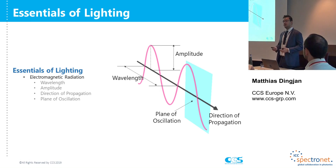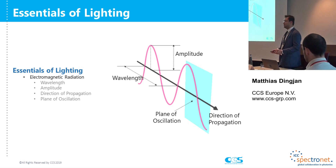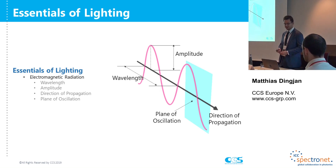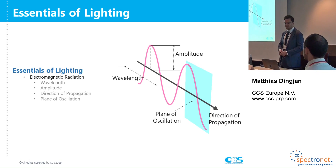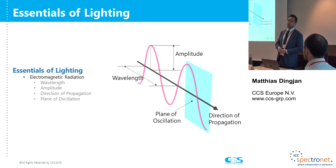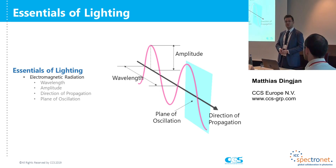The following component is amplitude. Amplitude is the height of the wave, and the higher the wave is, the more intense your light is. Then we have direction of propagation, which is a fancy way of saying which way your light is going — left, right, up, down. And finally we have the plane of oscillation, which has to do with the ability of polarization, which we'll get into a little bit later in the presentation.